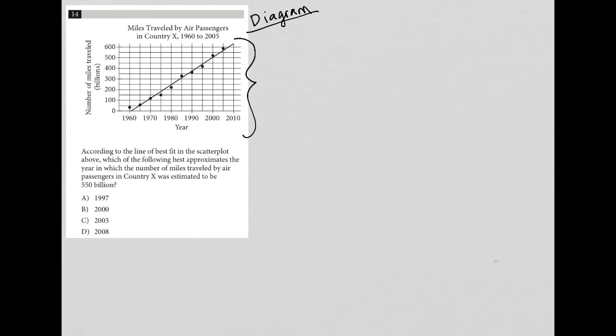I like to look at the title. Here we have miles traveled by air passengers in Country X between 1960 and 2005. On the y-axis, we have number of miles traveled in billions—that may or may not be important. And on the x-axis, we have the years.